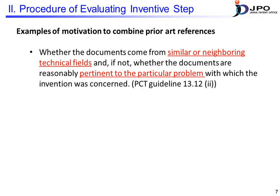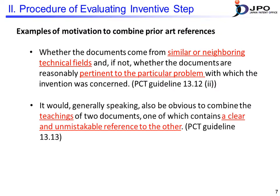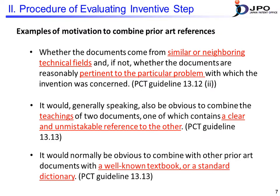We have to consider what the motivations are for combining prior art references. The PCT guidelines list some examples that may be motivation for combining prior art. If prior art belongs to an identical or similar technical field, or if each case of prior art relates closely to the problem of the claimed invention, they can be a motivation to combine said prior art. The fact that the combination of two or more prior art references is obvious for a person skilled in the art is also one of the motivations. Furthermore, if the prior art is publicly well-known technology, such as being indicated in textbooks or dictionaries, this may also be a motivation to combine the prior art references.